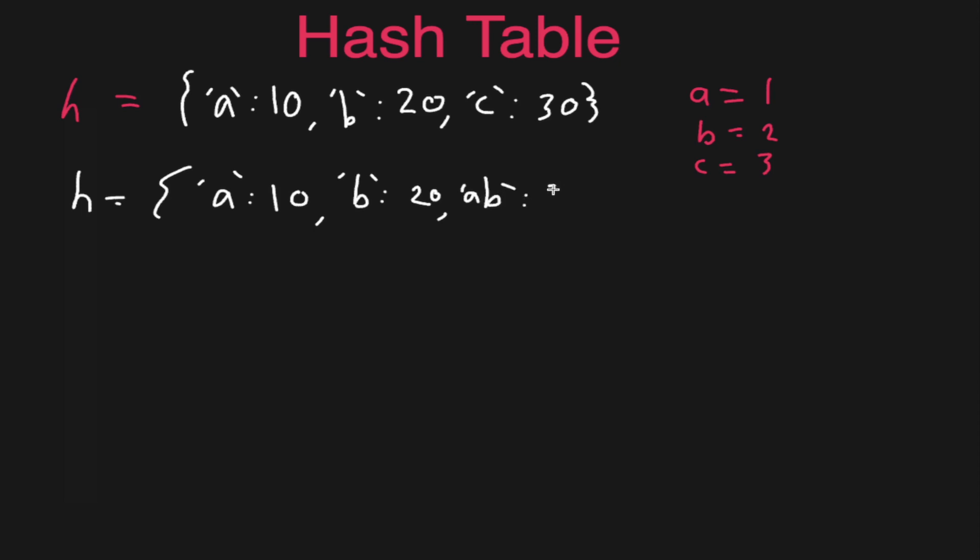And then let's say we got the value 'ab' and that has the value of 30, and then we have the value of 'ba' which has the value of 40. Now if we were to use this same simple hashing function here, basically you can already see the problem.